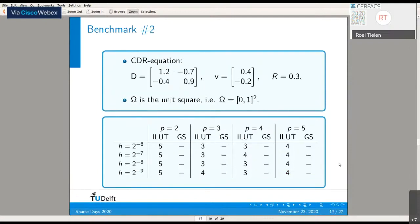If we slightly change our model problem to a real CDR equation, we see that Gauss-Seidel doesn't even lead to a converging multigrid method anymore, but the ILU(T) smoother still performs quite nicely.